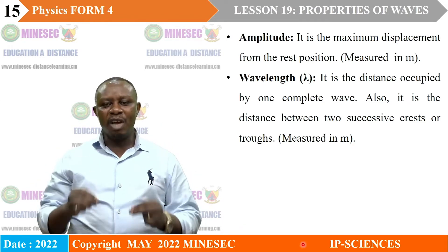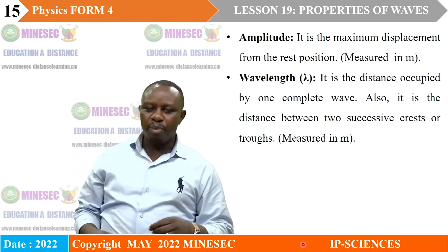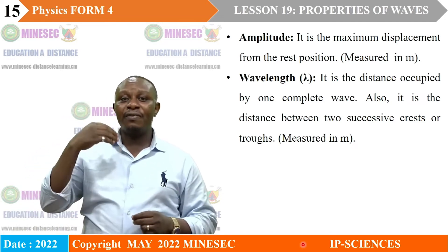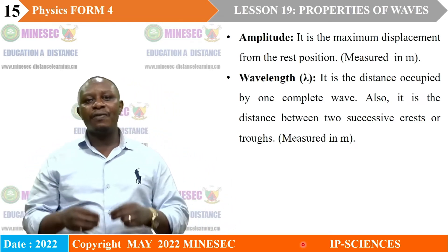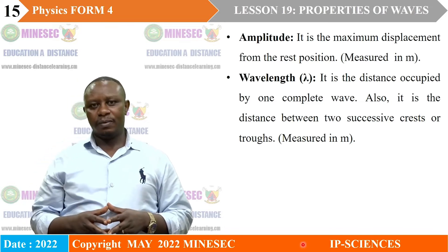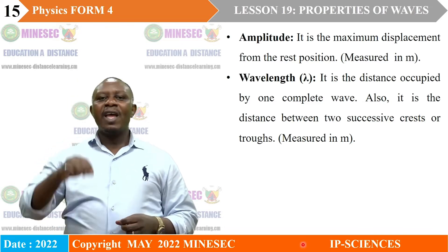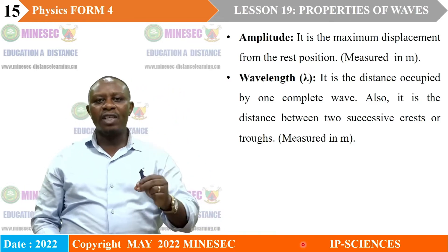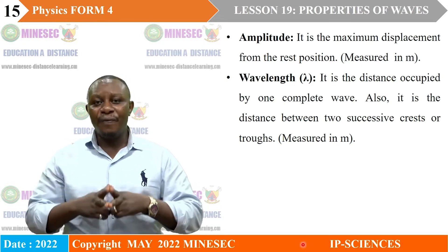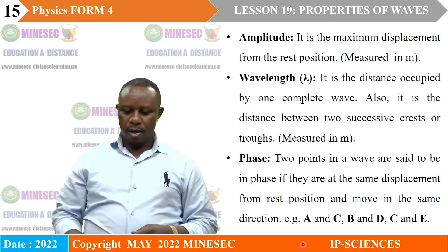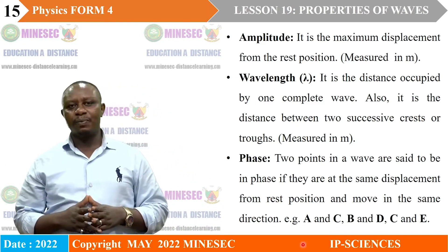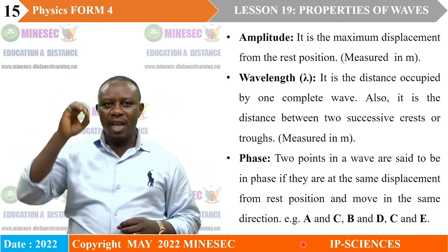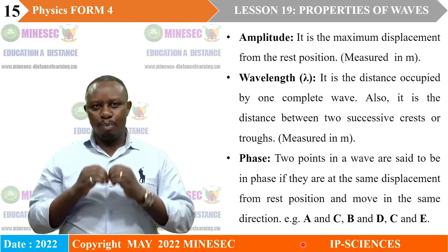As you saw in the previous figure, wavelength can be the distance between two successive crests or two successive troughs. We are going to see that a wavelength is equally the distance between two successive particles that are vibrating in phase. Two points in a wave are said to be in phase if they are at the same displacement from the rest position.